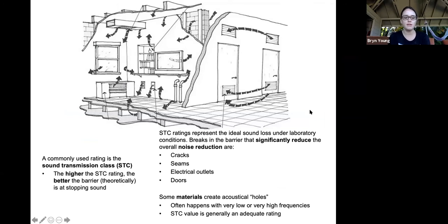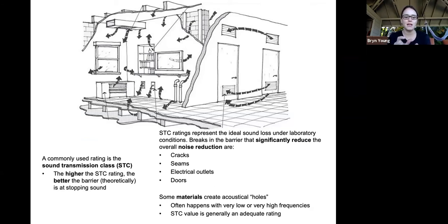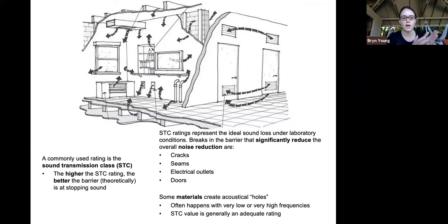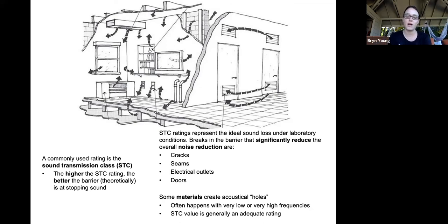A commonly used rating is the STC rating — the Sound Transmission Class. This is important to know because if you are looking at certain materials, they might have an STC rating. They might also have an NRC rating, which is a Noise Reduction Classification. The higher the STC rating, the better the barrier is at stopping sound. If you pick up a wall panel with a high STC or NRC rating, it's better at trapping that sound.